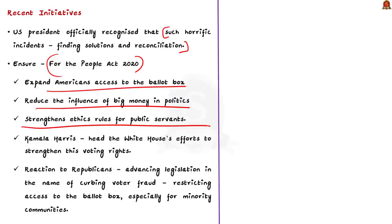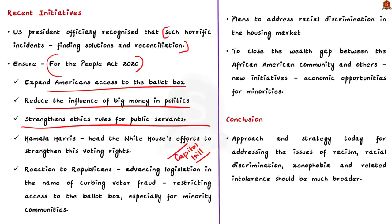Biden appointed Vice President Kamala Harris — an African American and Indian American — to head the White House's efforts to strengthen voting rights. Biden's action came at a time when Republicans on Capitol Hill and state legislators are advancing legislation in the name of curbing voter fraud, accused of being aimed at restricting ballot access especially for minority communities. Moving forward, the president also plans to address racial discrimination in the housing market and close the wealth gap between the African American community and others through new economic opportunity initiatives for minorities.